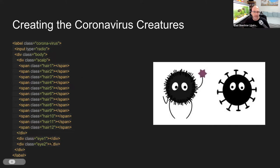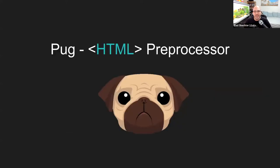I saw there was a lot of repetition in my HTML code — like creating those 12 hairs — and in the real game I have 100 coronavirus creatures. I didn't want to copy-paste them one by one, so I needed a way to solve this problem. For the first time in my life I used an HTML preprocessor called Pug, which gives us the possibility to do repetition in the HTML part in a smarter way.